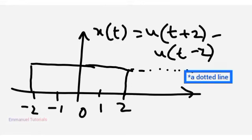So the resultant signal what you are going to get is a rectangular signal which starts from minus 2 to plus 2. This is x(t).